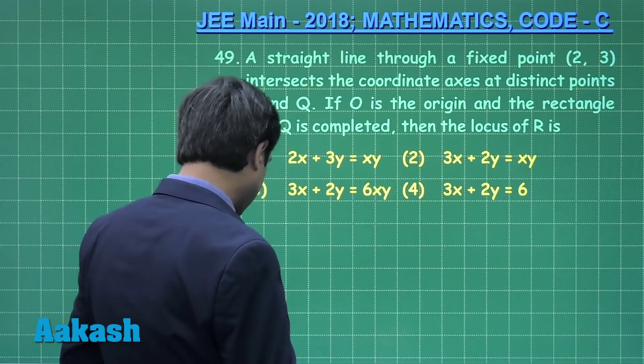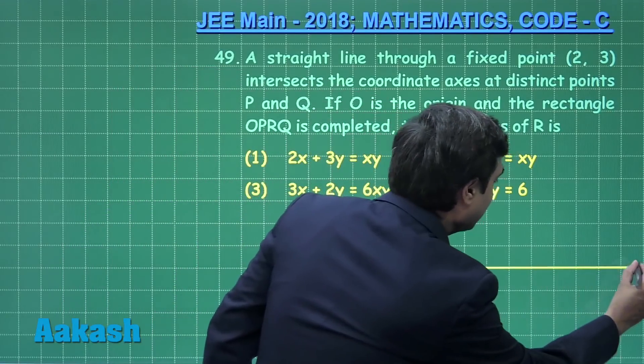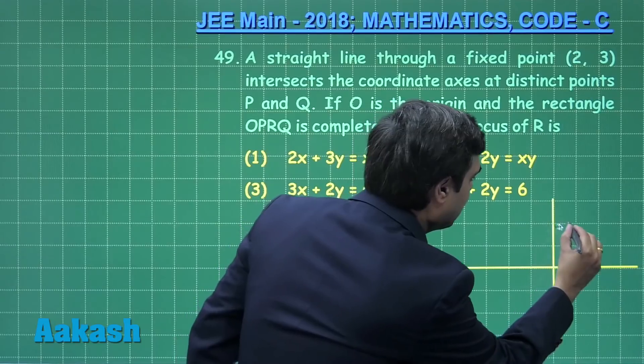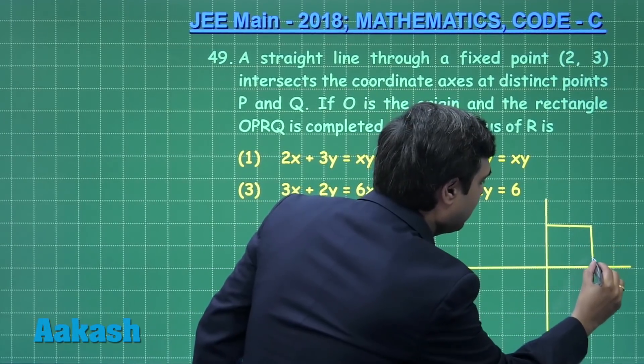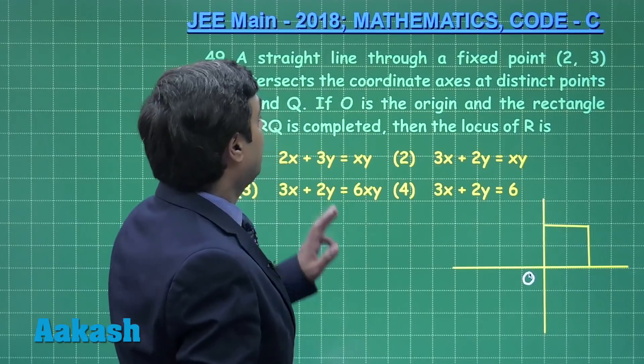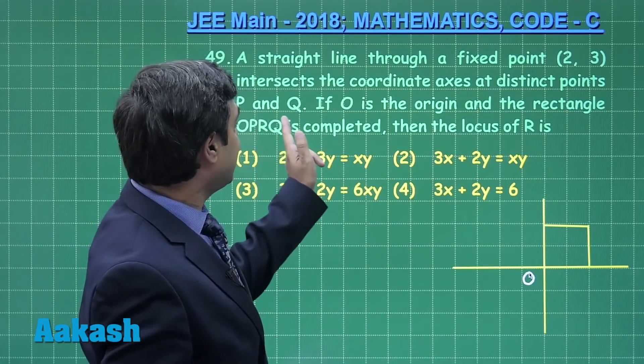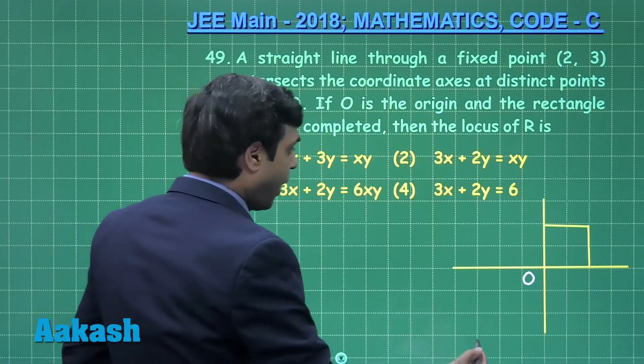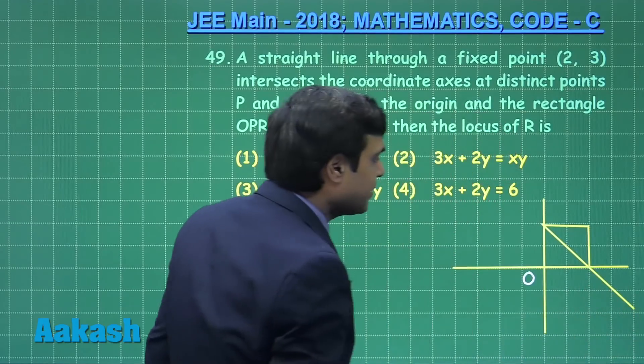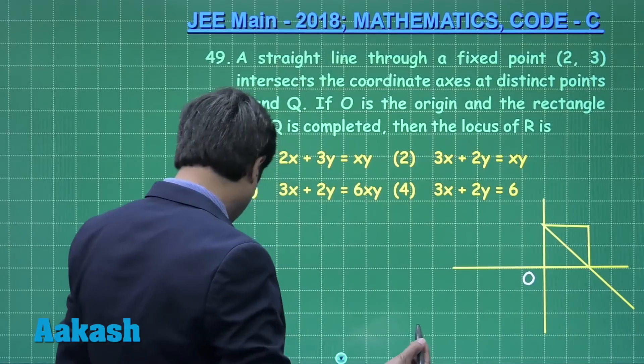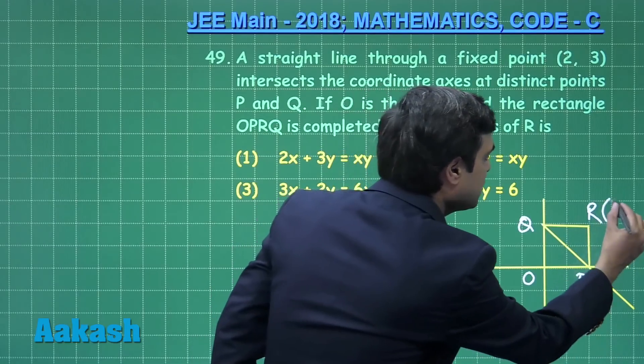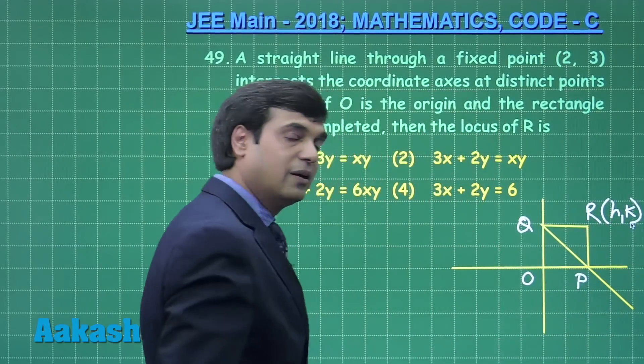Let us start this question by considering the coordinate system first, then draw a rectangle like this. Point O is given to me. They have said it is intersecting at P and Q, meaning that our line is like this which has intersected at two points P and Q. Let us mention P and Q. The rectangle is completed; we have to find the locus of this point H, K.